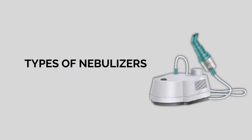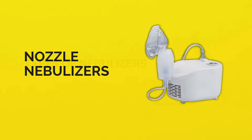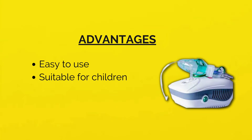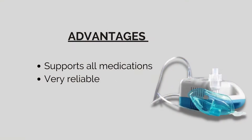Now let's talk about the types of nebulizers. First, we'll discuss nozzle nebulizers. The nozzle nebulizer works by means of a compressor that generates compressed air. Nozzle nebulizers are easy to use and are also suitable for children. They support almost all types of medications and are very reliable.